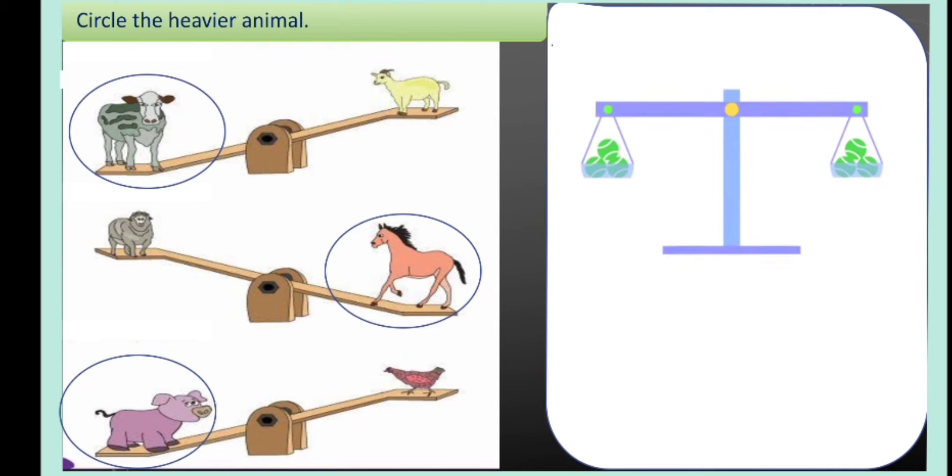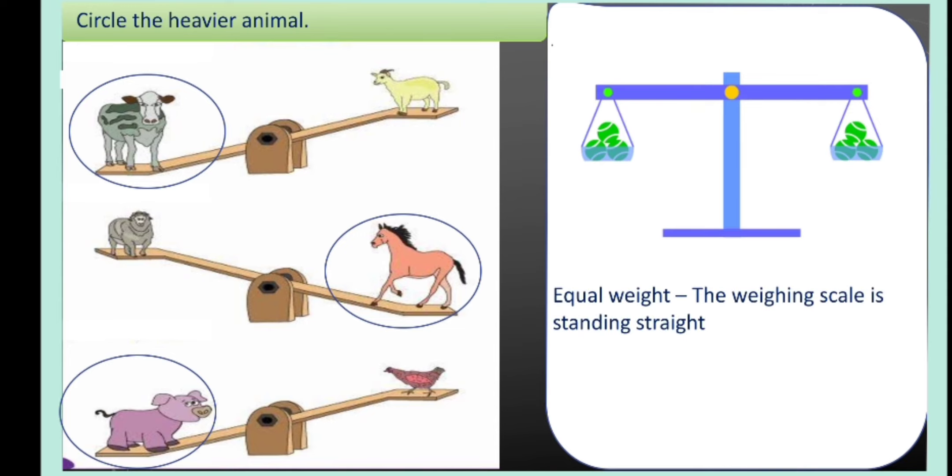Now another example. On a weighing scale, we have three balls to the right and three balls to the left. What did you see? Notice that the weighing scale is standing straight. This shows the weight of the balls on the right side is equal to the weight of the balls at the left side. So we have equal weight.